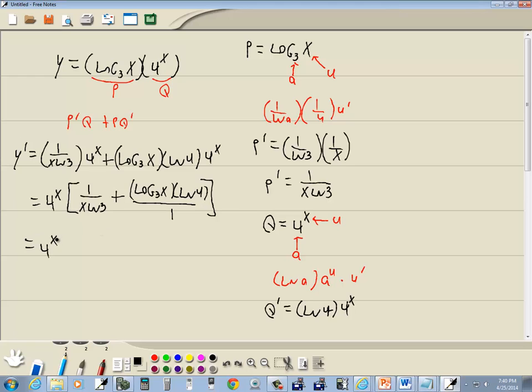Common denominator is x natural log of 3. The first fraction already has it, I leave it alone. The second fraction, we multiply the bottom part by x natural log of 3, so we'll multiply the top part by x natural log of 3.